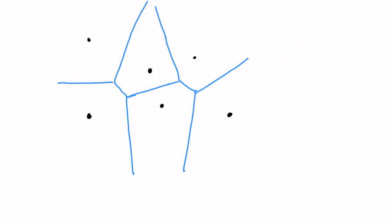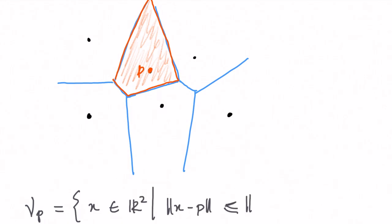The Voronoi cell of a given generator, for example the point P in orange here, represents the set of points in the Euclidean space that are closer to P than to any other generators.